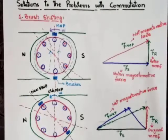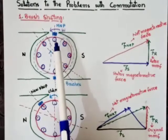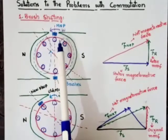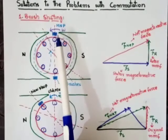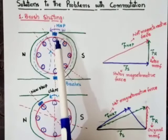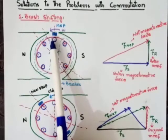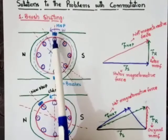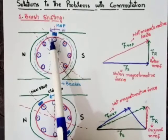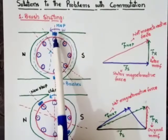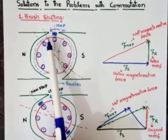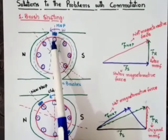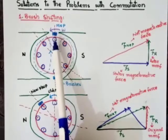As we know, the magnetic neutral plane is shifted in the direction of rotation in the case of a generator, and in the opposite direction in the case of a motor. If we shift the brush manually in the direction of the magnetic neutral plane, then the problem of sparking can be completely or partially reduced. We want to shift the brushes in the direction of the magnetic neutral plane, and by doing this we can reduce the problem of sparking across the brushes.